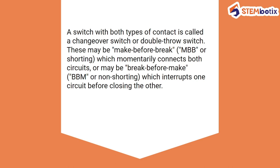A switch with both types of contacts is called a change-over switch or double throw switch — it can both break and make the circuit, alternating between two paths. This may be 'make before break,' which momentarily contacts both circuits, or 'break before make,' which interrupts one circuit before closing the other.